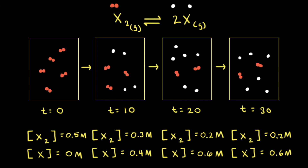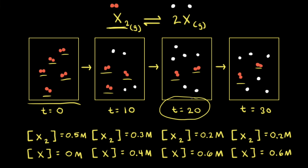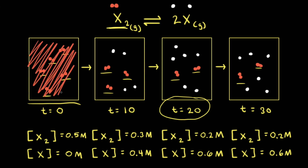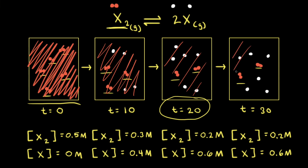Finally, let's use these particulate diagrams to think about what we would see at a macroscopic level as the reaction proceeds to equilibrium. In the first diagram we see only red particles — only X2 is present. As time goes on, the number of red particles decreases from 5 to 3 to 2, and stays at 2 because we reach equilibrium after 20 seconds. Macroscopically, the reaction vessel would start out darker brown-red, then become lighter brown-red, and finally an even lighter brown-red at equilibrium — staying that same shade because concentrations of reactants and products remain constant. Even though reactants are turning into products, the products are turning back into reactants at the same rate.